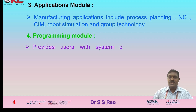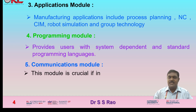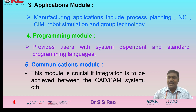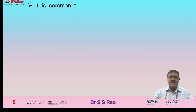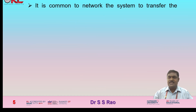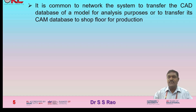The fourth one is the programming module. It provides users with system-dependent and standard programming languages. The fifth one is the communications module. This module is crucial if integration is to be achieved between the CAD/CAM system, other computer systems, and manufacturing facilities. It is common to network the system to transfer the CAD database of a model for analysis purposes, or to transfer its CAM database to the shop floor for production.